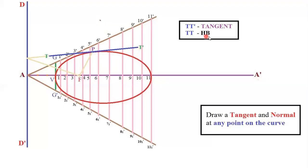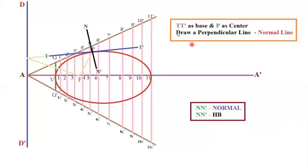With TT' as base and P as center, draw a perpendicular line — this is the normal NN'. The normal should also be drawn with HB pencil. The curve, tangent, and normal are now complete. After completing the entire diagram, go back and mark the dimensions.